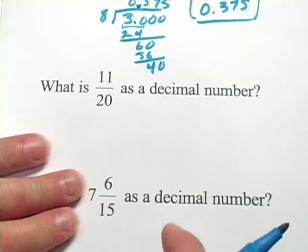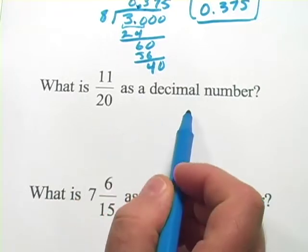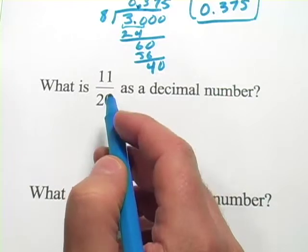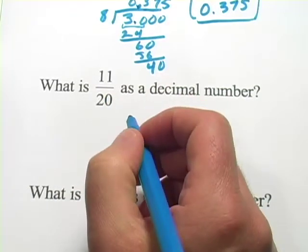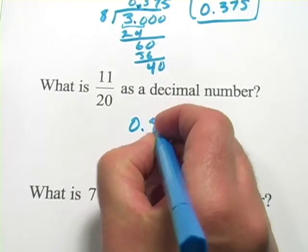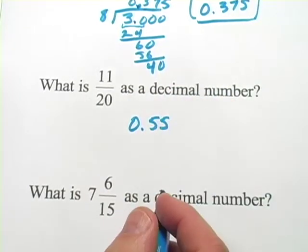Alright, so here we have what is 11 twentieths as a decimal. Again, you're just going to take 11 and you're going to divide by 20. If you have to do it by hand, you can figure out how to do that. If you've got a calculator, you'll find out quickly, it's 0.55.